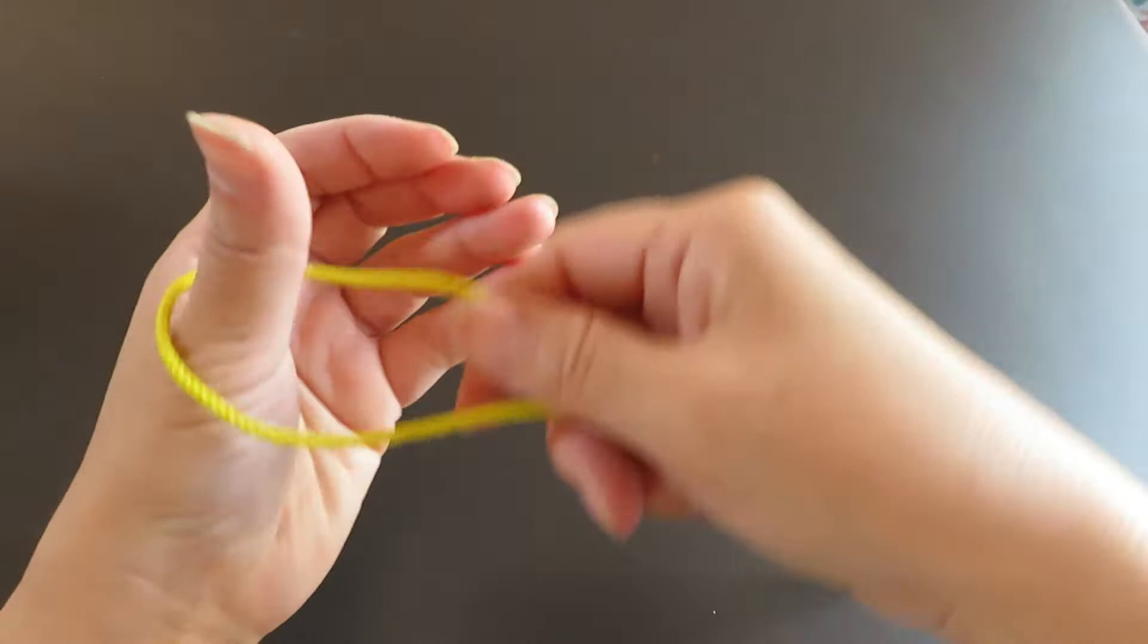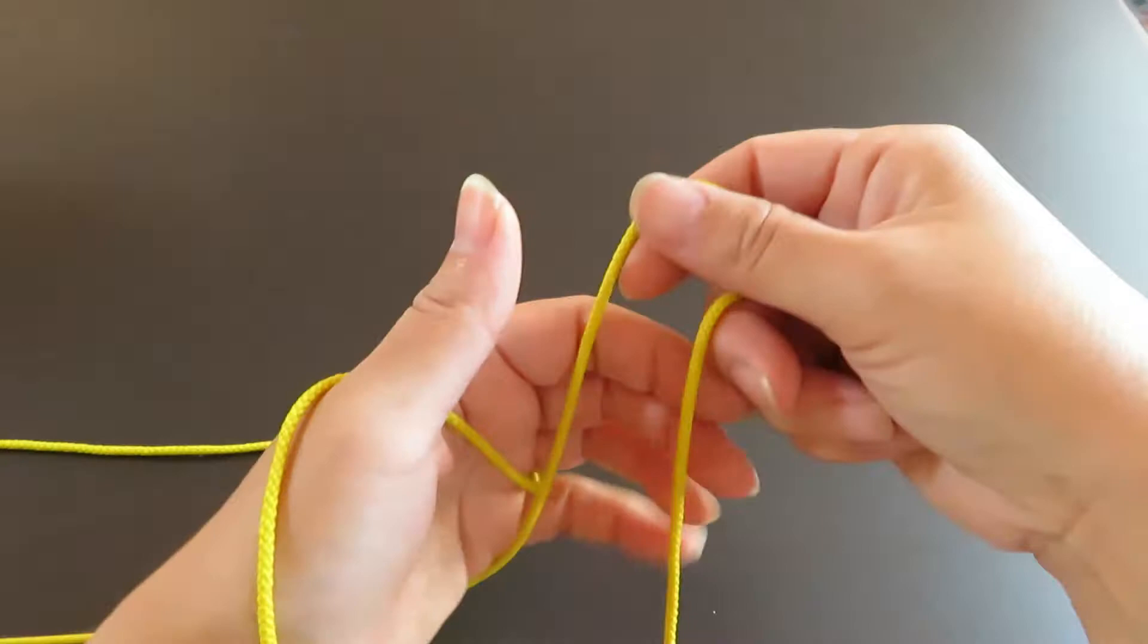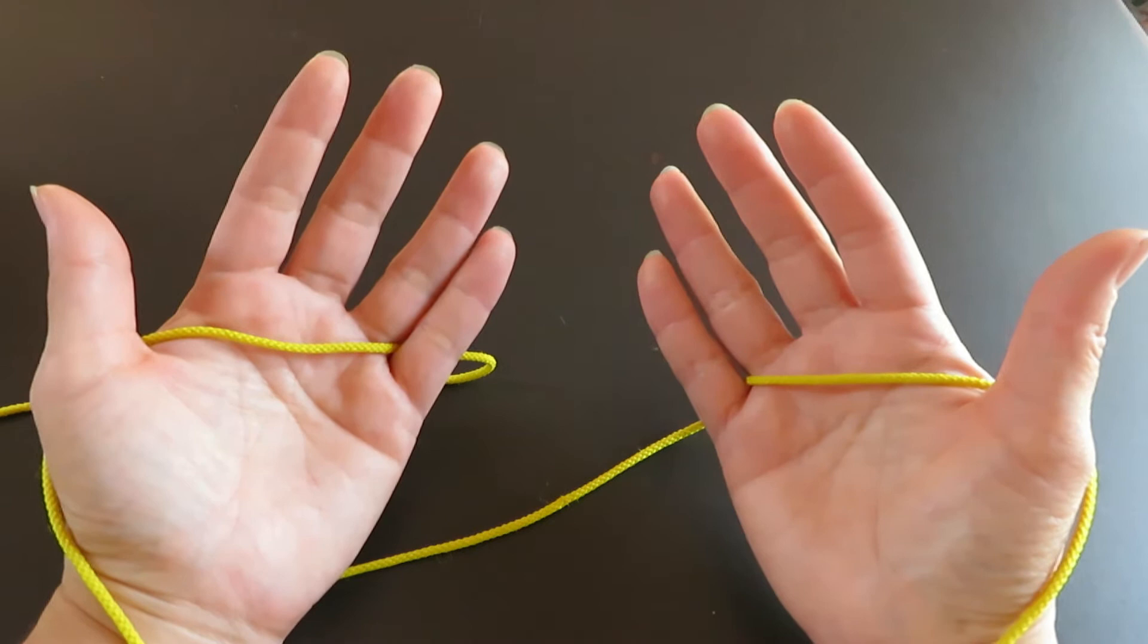First, spread out the Cat's Cradle string loop and one end of the loop hook on thumb and pinky, and keep these two strings parallel and the other end of the loop hook on thumb and pinky as well.